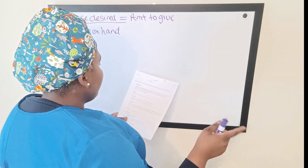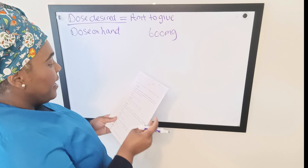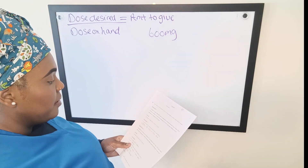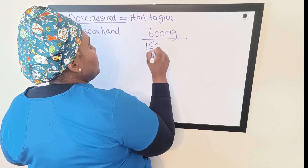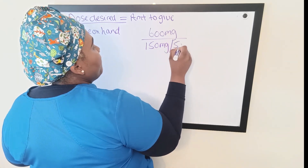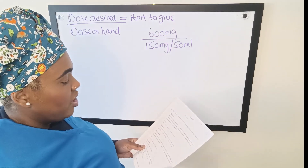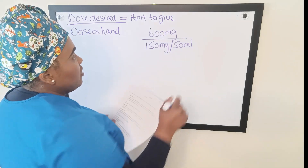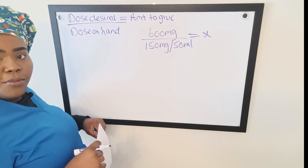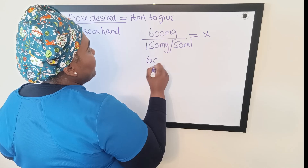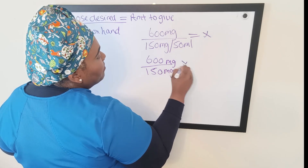First, 600 milligrams is our desired dose — the patient was ordered 600 milligrams. The IV is available as 150 milligrams for every 50 mils. We need to find out how much of the IV solution is required for this dosage, which is X. What we do is divide the dose desired by the dose on hand and multiply by quantity.